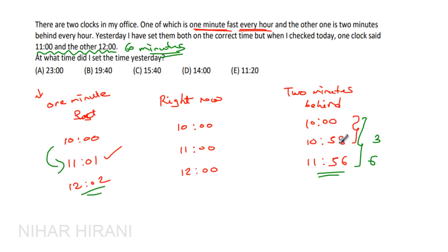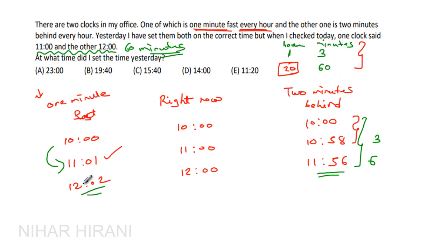So how many hours will it take to get a difference of 60 minutes? Since every one hour there is a difference of three minutes, for a difference of 60 minutes it will take 20 hours. The question says one clock shows 11 and the other shows 12, so there is a difference of 60 minutes. It means the clock was set on the correct time 20 hours ago.